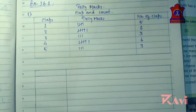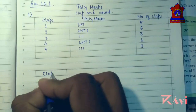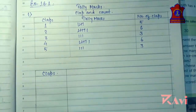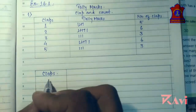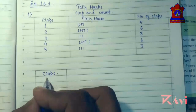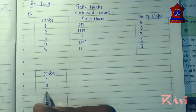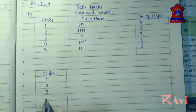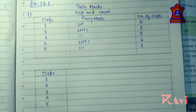In this column we will write the number of claps: 1, 2, 3, 4, and 5 claps.